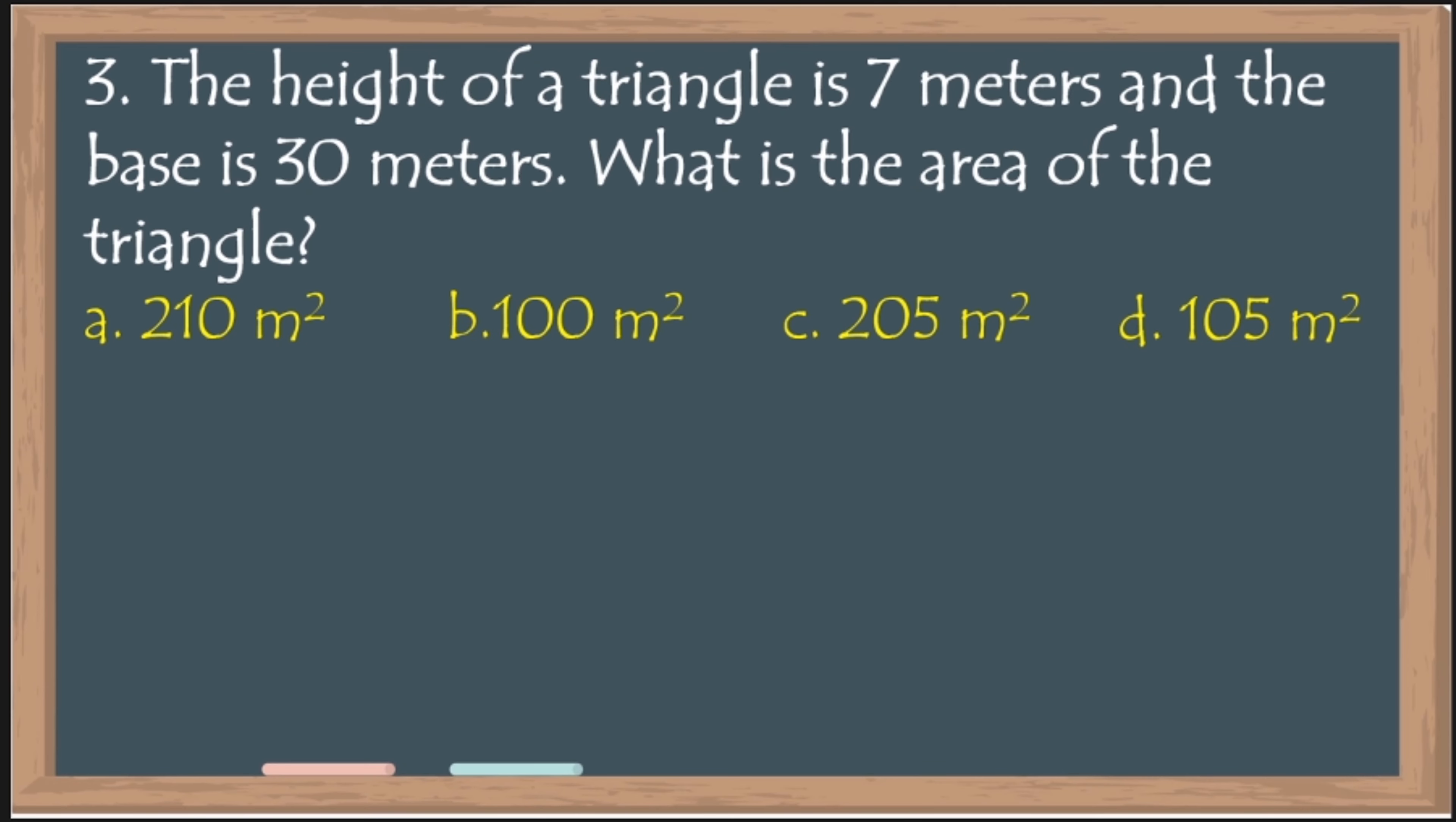Number 3. The height of a triangle is 7 meters and the base is 30 meters. What is the area of a triangle? Now, para ma-visualize nyo, let's draw a triangle. So, etong nasa baba, this is the base. Then, the height, hindi ito yung height nya. Yung height nya, eto. Pag height kasi, makakabuka dapat ng 90 degrees doon sa base.